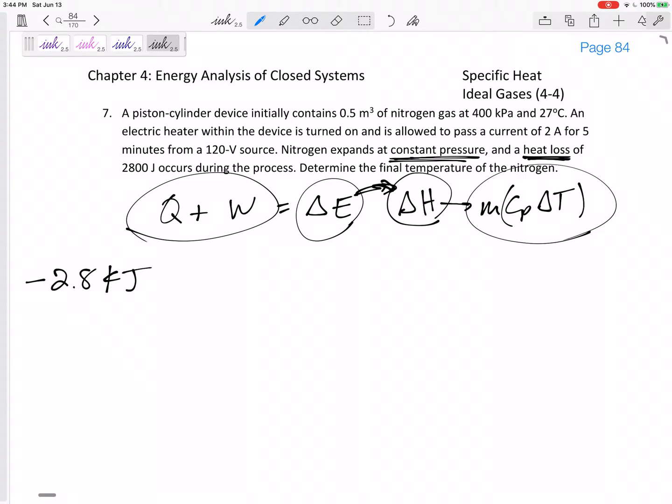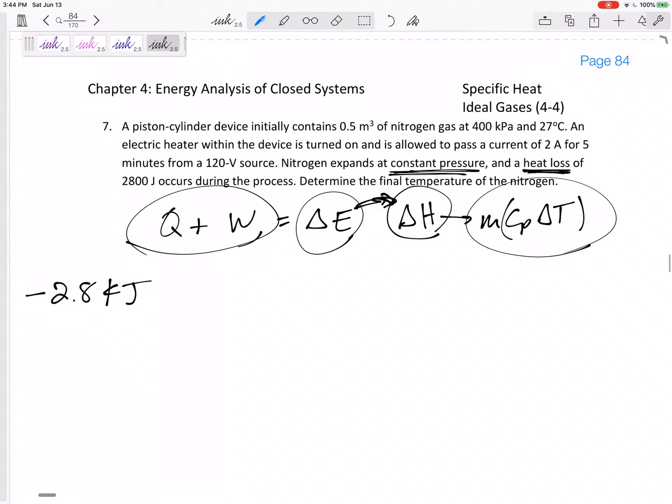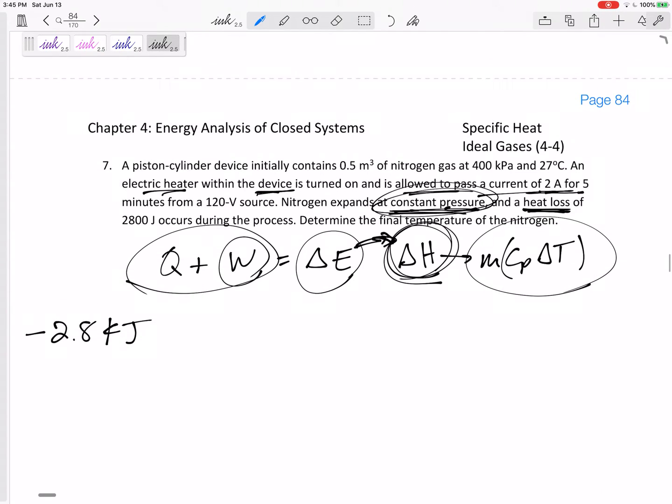Is there any work besides boundary work? Remember we don't have to worry about boundary work for a constant pressure process because it's kind of implied in the delta H on the right hand side of our equation. So no boundary work, but is there any other work? Yeah, the electric heater device - it passes a current of 2 amps for 5 minutes.